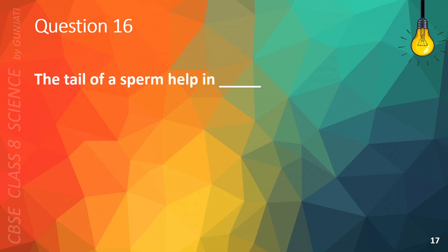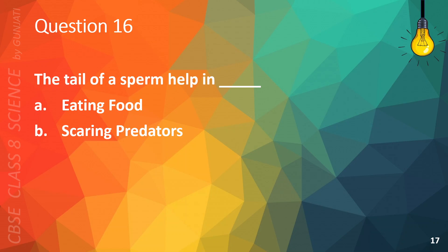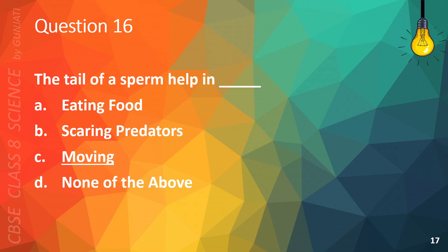Question 16. The tail of a sperm helps in: A. Eating food, B. Scaring predators, C. Moving, or D. None of the above. The correct answer is C. Moving.